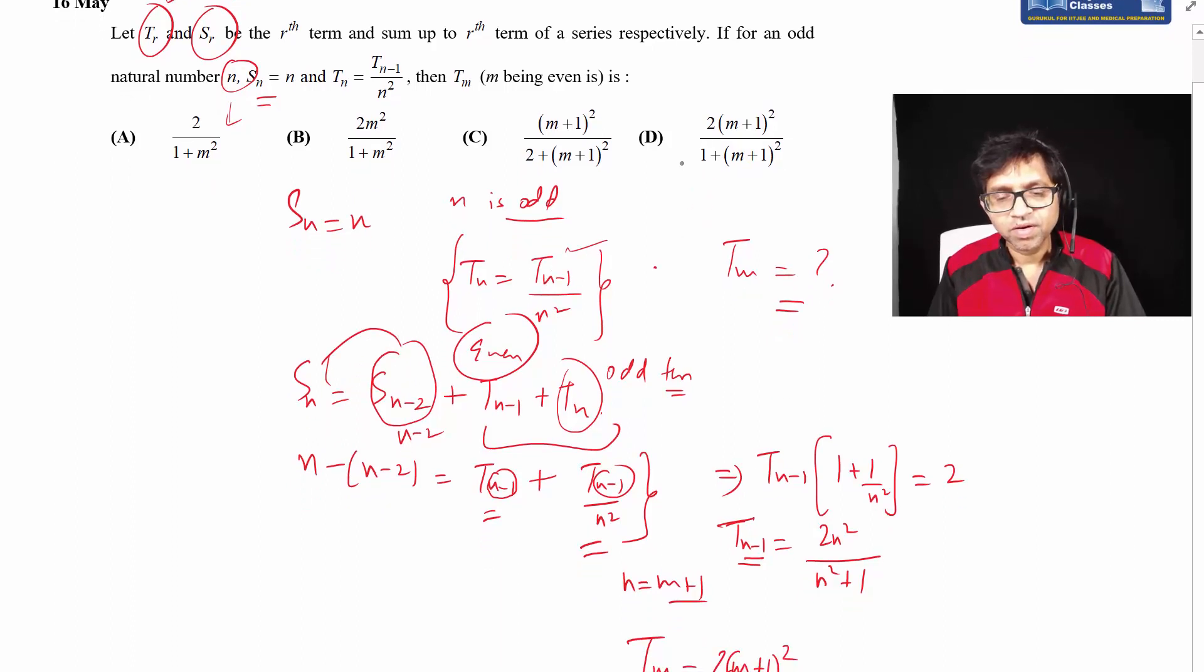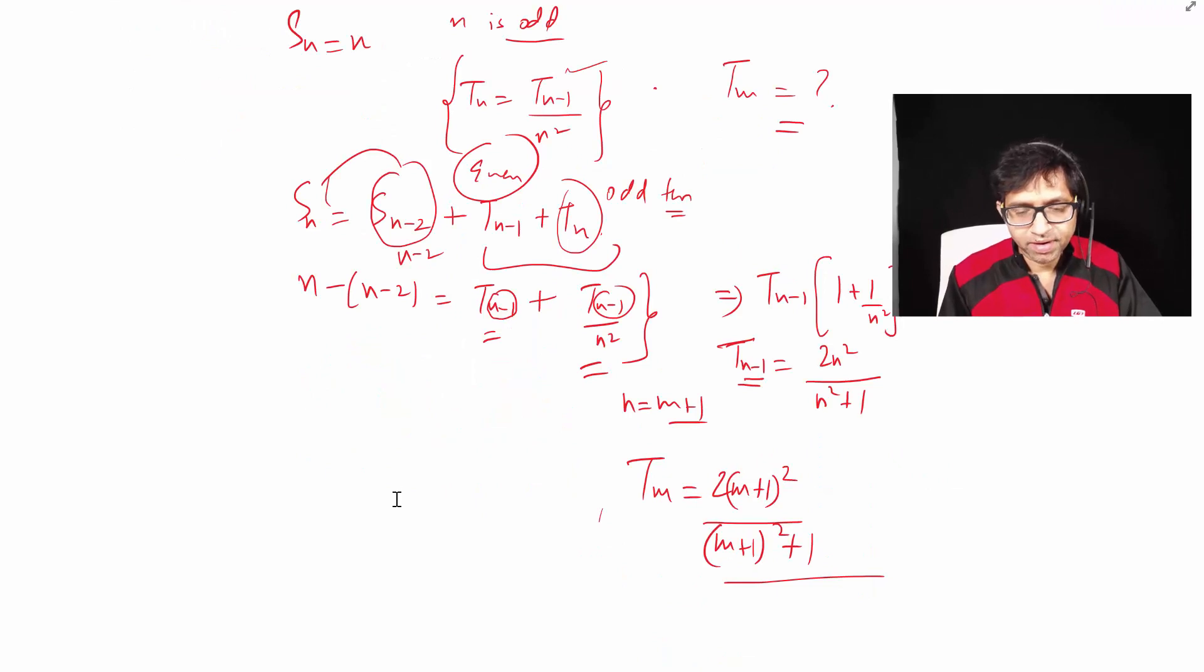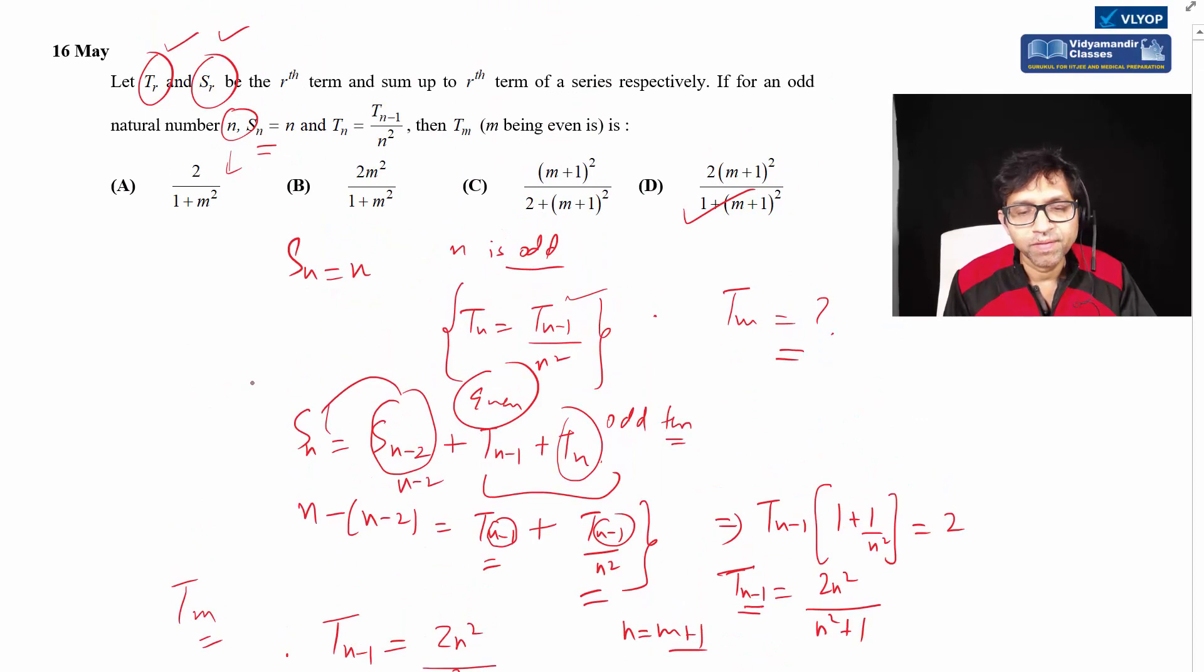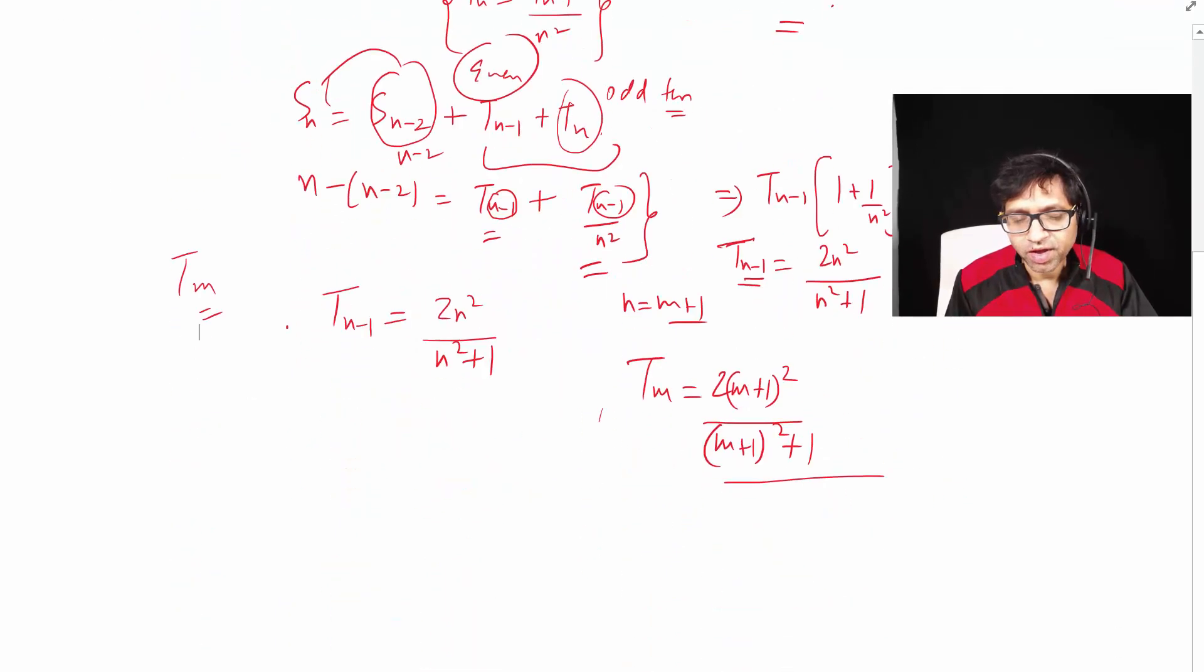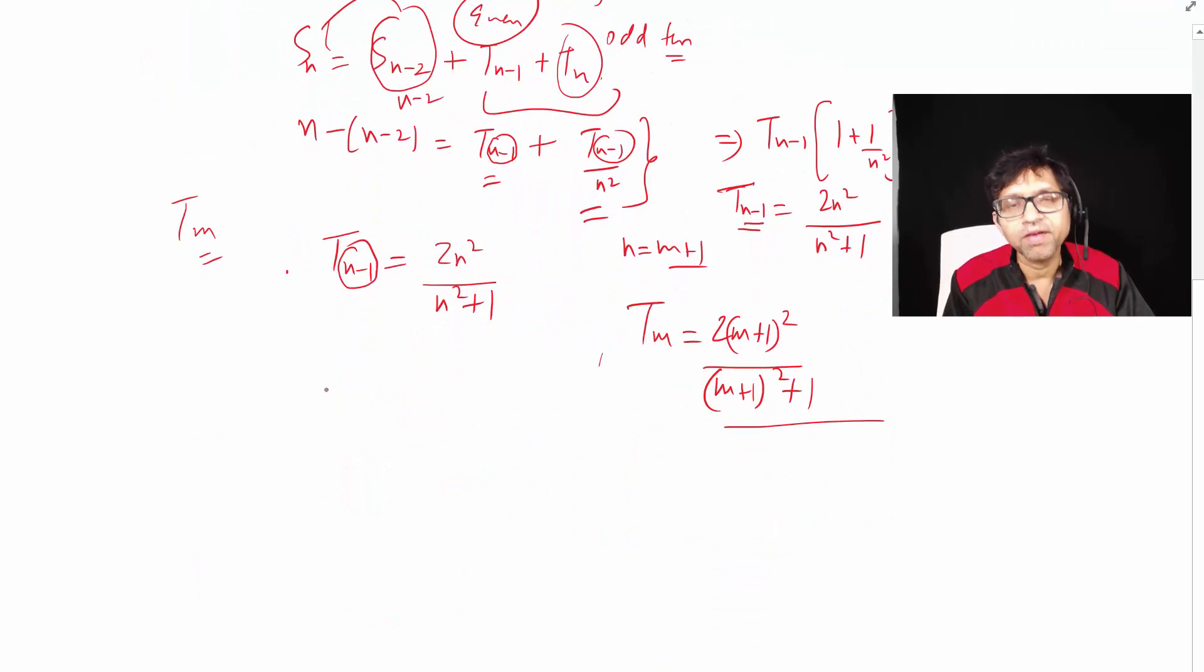That's the D choice. Let me clarify this because people get confused here. We have tn minus one here, which we calculated as 2 into n squared. We're asked for tm when m is even. The even term came here - see, n minus one is even. Since n is odd, n minus one is even, so we replaced n minus one with m. Since n minus one equals m, and m is even.